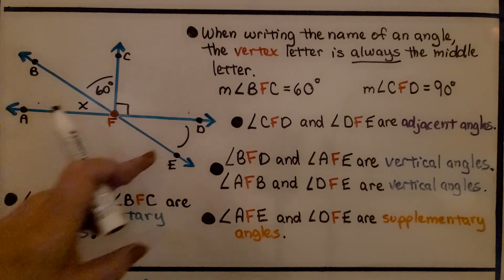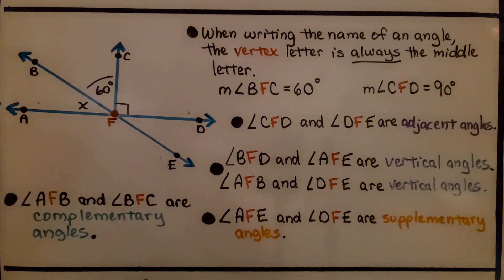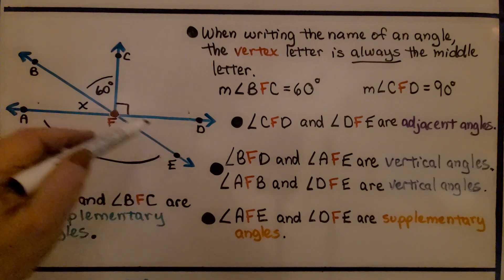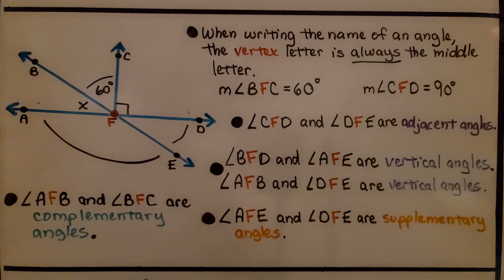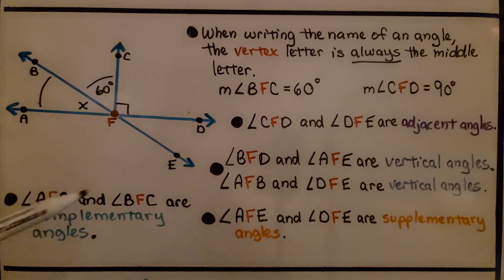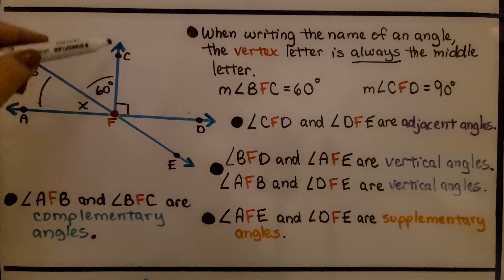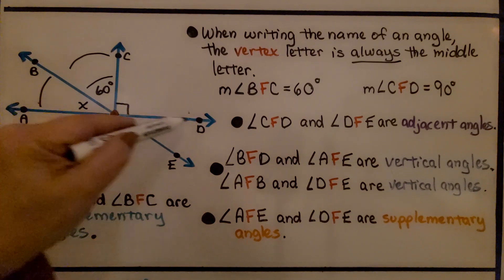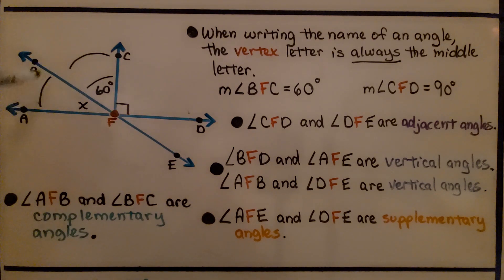Angle AFE — the large angle — and angle DFE are supplementary angles; if we add them together, they equal 180 degrees. Angle AFB and angle BFC are complementary angles. We know this is a straight line because of the square corner indicating 90 degrees, so these two angles together must equal 90 degrees — they are complementary.